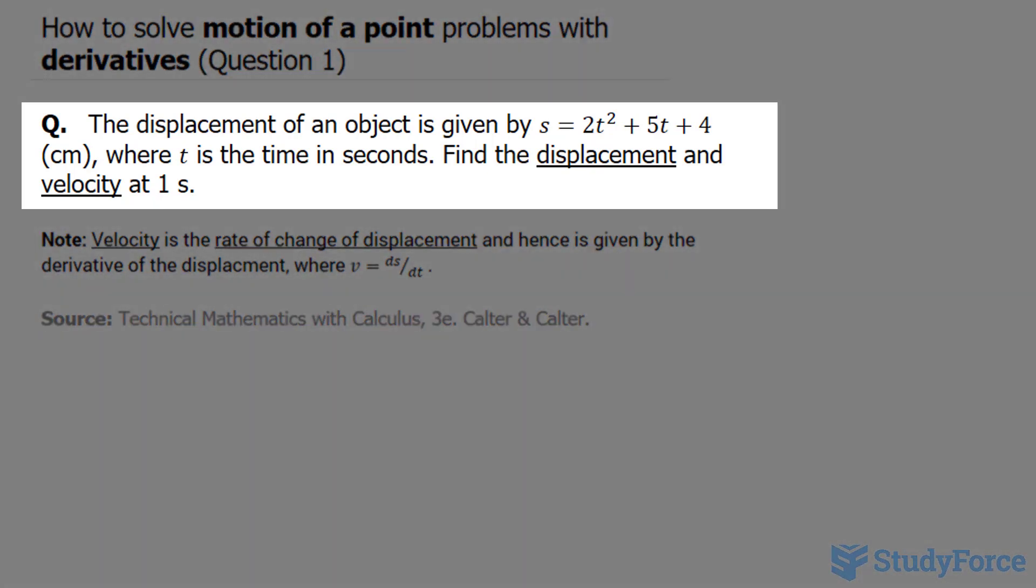The question reads: the displacement of an object is given by the equation s = 2t² + 5t + 4 (cm), where t is the time in seconds.